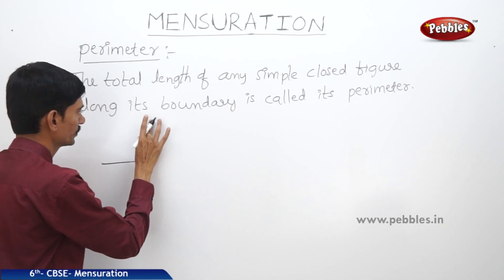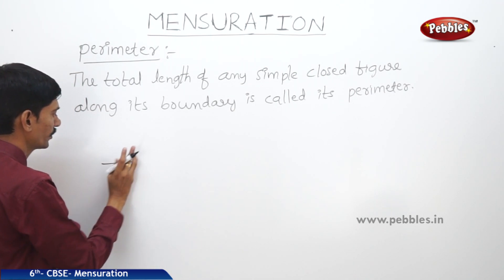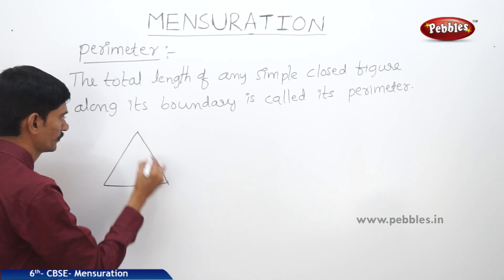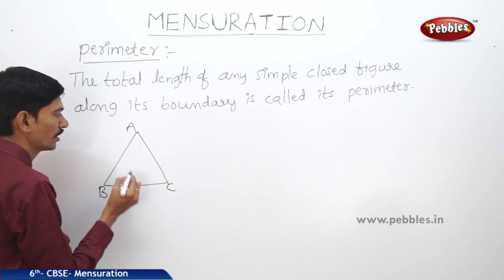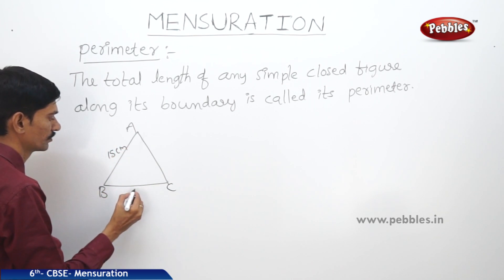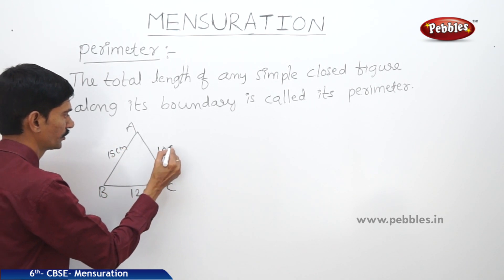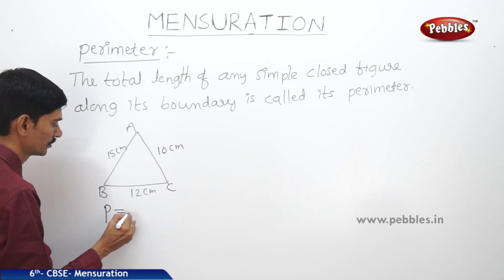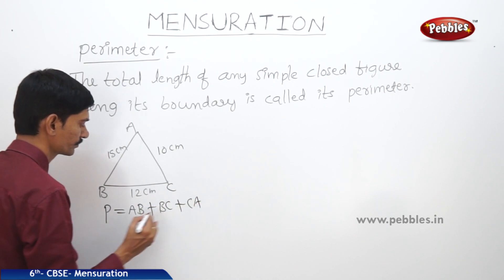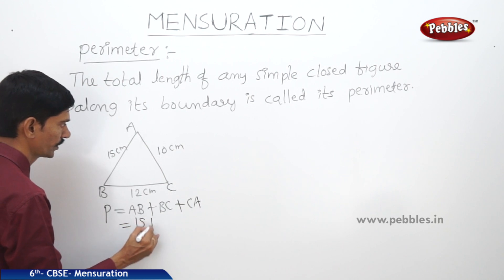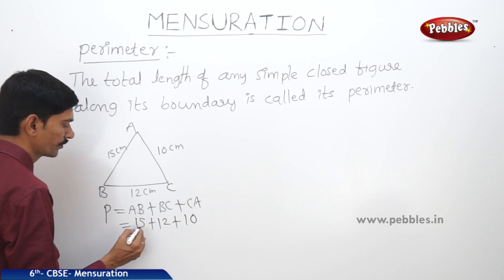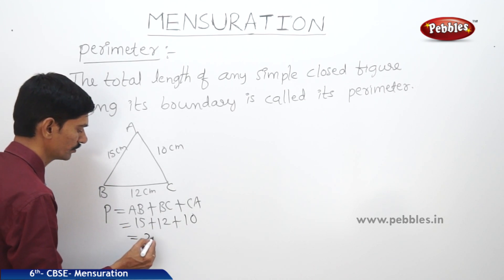For example, if a land is in the shape of triangle ABC and the lengths of the three sides are given as 15 cm, 12 cm, and 10 cm, then the perimeter of this triangle is AB + BC + CA, which equals 15 + 12 + 10 = 37 cm.